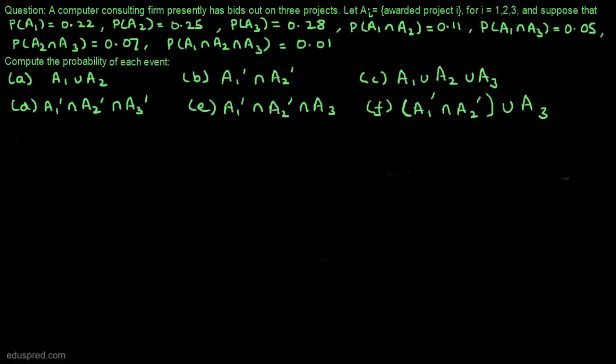A computer consulting firm presently has bids out on three projects. Let Ai be equal to 'awarded project i' for i equal to 1, 2, and 3. And suppose that these are the probabilities that are given to us.